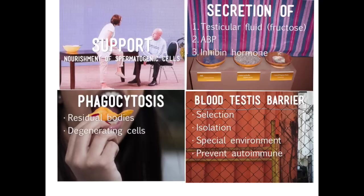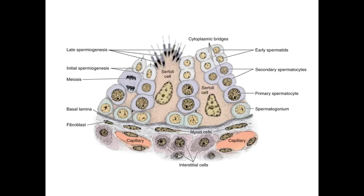The antibodies produced against spermatogenic cells are prevented from reaching them by the blood-testis barrier. This diagram shows the structure of the seminiferous tubule with the basement membrane, myoid cells, blood capillaries, interstitial cells producing testosterone, blood capillaries lined by flat endothelial cells, prominent fibroblasts in the connective tissue, and the Sertoli cell identifiable only by its pale nucleus with prominent nucleolus very near to the basement membrane.